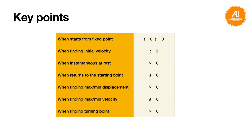'Returns to the starting point' means displacement s = 0 — the particle makes a U-turn and returns to its original position. For maximum or minimum displacement, v = 0, because the rate of change of displacement is zero at those points. Similarly, for maximum or minimum velocity, a = 0; find t and substitute into the velocity equation. At a turning point, v = 0, because the particle must momentarily stop before changing direction. This concept is very important and will be used frequently.